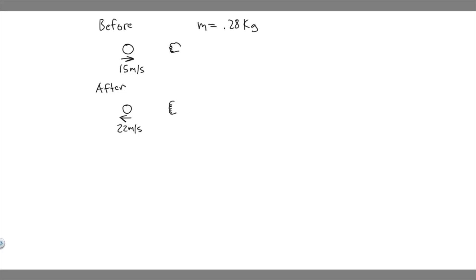In this problem, we're told a 0.28 kg volleyball approaches a player horizontally with a speed of 15 meters per second. The player strikes the ball with her fist and causes the ball to move in an opposite direction with a speed of 22 meters per second. Part A: what impulse is delivered to the ball by the player? Part B: if the player's fist is in contact with the ball for 0.0600 seconds, find the magnitude of the average force exerted on the player's fist.